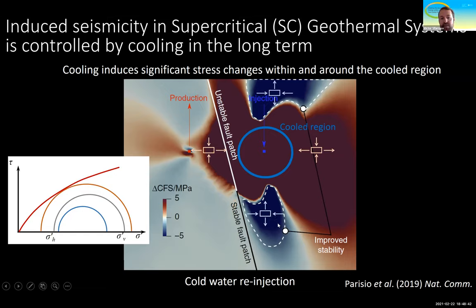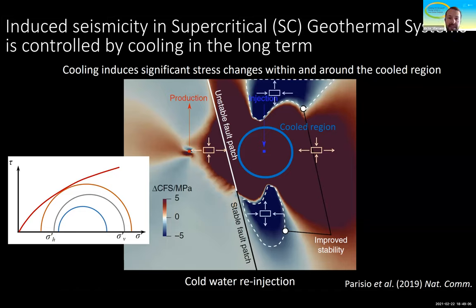In a normal faulting stress regime, this increases stability both below and above. But on the sides of the cooled region there is a decrease in horizontal stresses. If we have a fault on the sides, we are going to destabilize it. So cooling may induce seismicity in the long term as the cold region grows — this is something to watch carefully if we go to these depths and high temperatures.